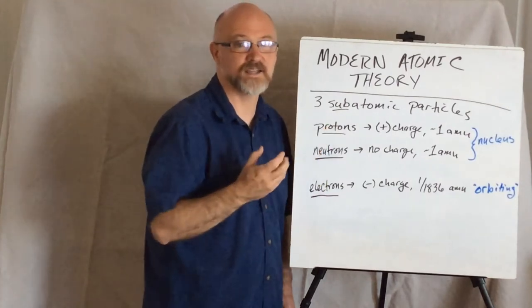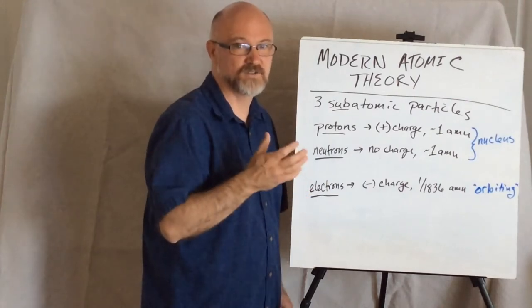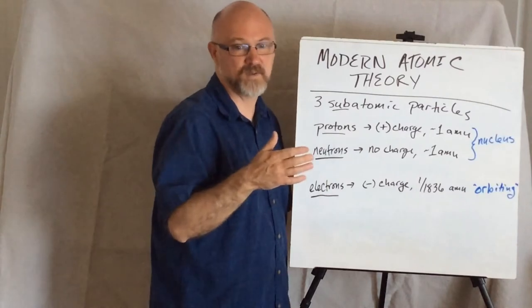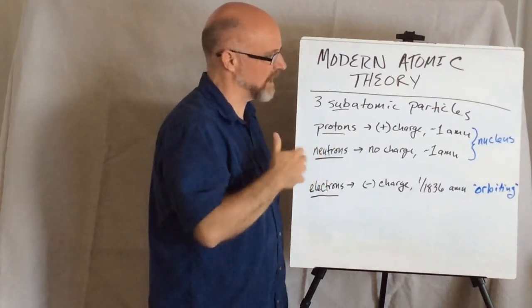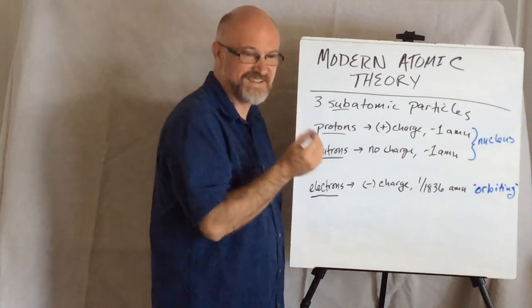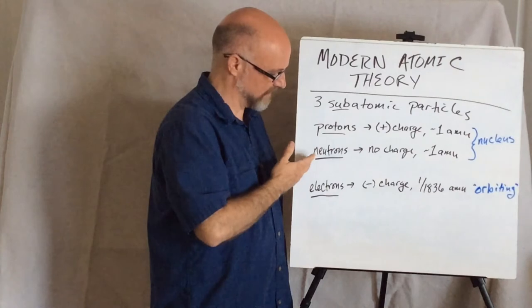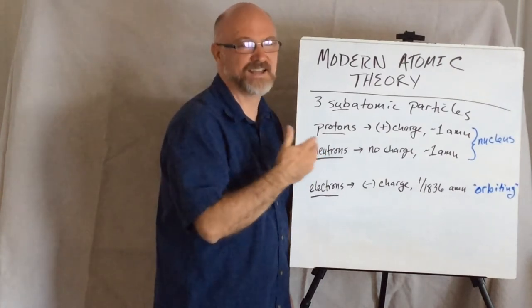And both of these particles you find in the core of the atom, the dense core called the nucleus. The structure that the Gold Foil experiment gave us insight into how atoms are structured, that there's dense cores of positive charge that, it turns out, also have other particles that contribute to the mass that act as the glue.